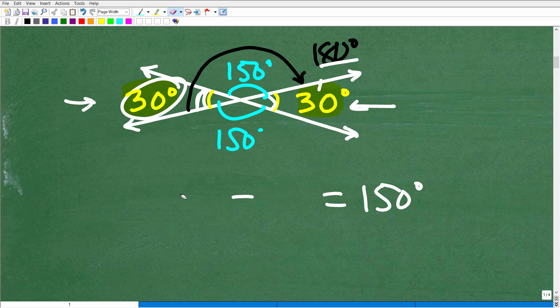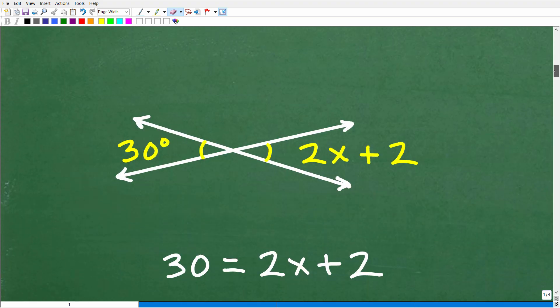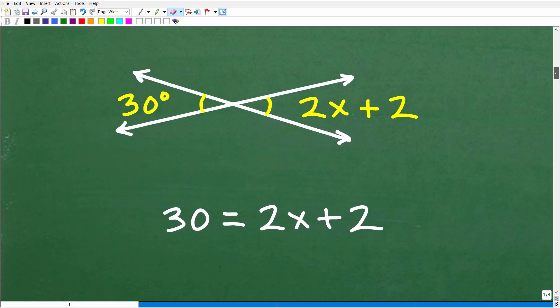But you can have more interesting problems than this. This is a very common type of geometry problem. The problem won't state that you have vertical angles here. It's just going to give you something like this and say, 'Solve for x' or 'Find the value of x.'